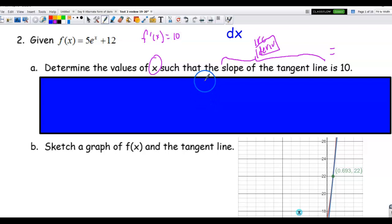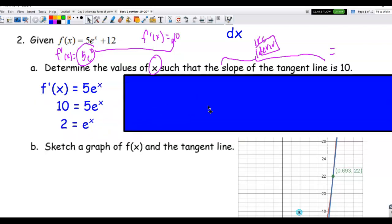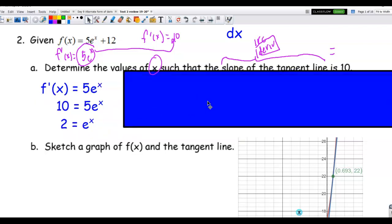So the derivative of 5e to the x, so if I do f prime of x, the derivative of 5e to the x is 5e to the x, and the derivative of 12 is 0. So I'm going to set 5e to the x equal to 10, and I'm going to solve. So there's my 5e to the x, setting it equal to 10. Divide both sides by 2, and I get e to the x equal to 2.